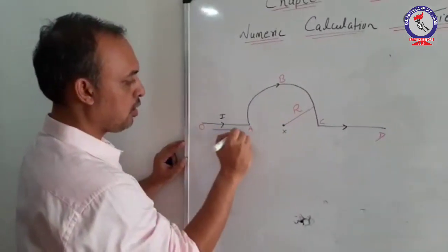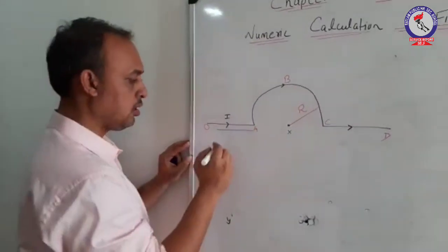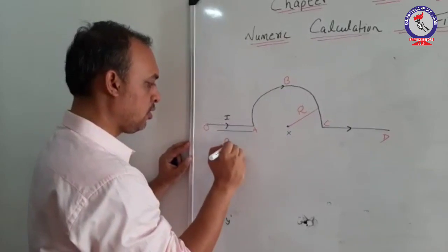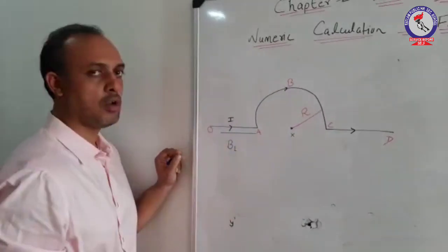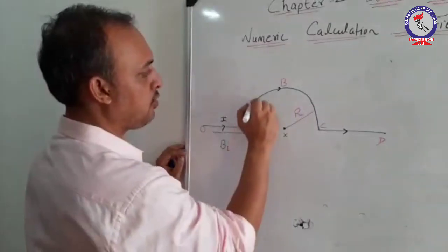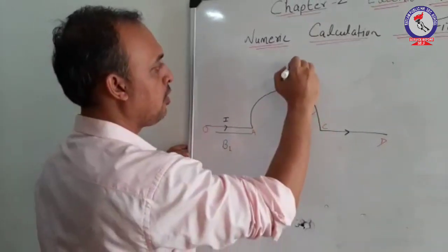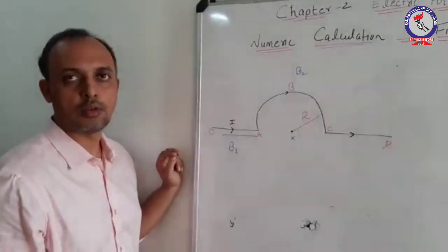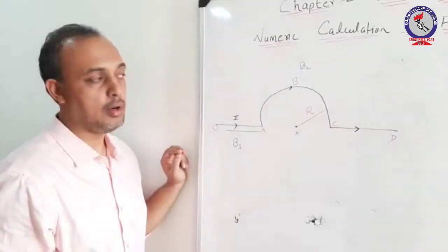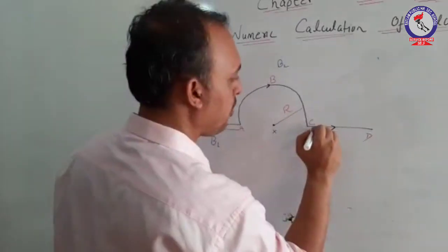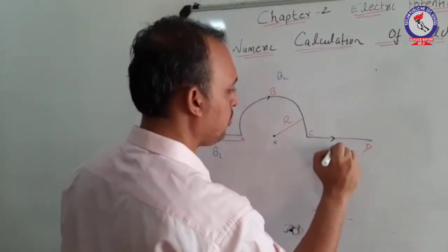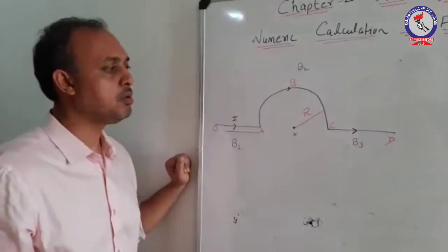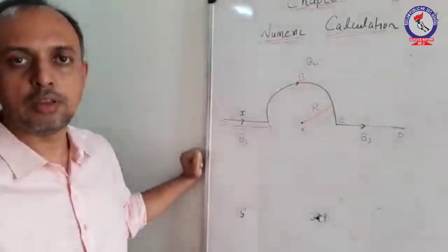One is this conductor OA, which is a straight conductor. Let us suppose field due to this straight conductor be B1. Then you have this semicircle. Let us suppose field due to this semicircular conductor coil will be taken as B2. Then you have another straight conductor CD. Let us suppose field due to this straight conductor be B3.